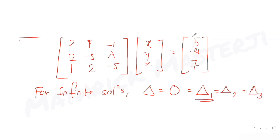Δ₁ means we replace the coefficients of x with the RHS values 5, μ, 7 — that determinant is also 0. Δ₂ means replacing the y-coefficients with 5, μ, 7 — also 0. Δ₃ means replacing the z-coefficients with 5, μ, 7 — also 0. Using this idea, let's first equate Δ = 0.